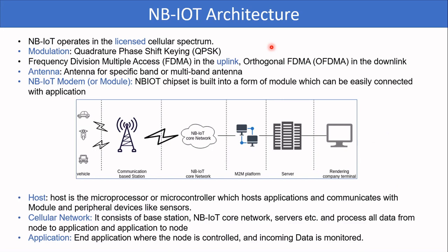The architecture of NB-IoT and cellular mobile networks is very similar. NB-IoT operates in the licensed cellular spectrum and uses QPSK as a modulation technique, also using FDMA and OFDMA for uplink and downlink. From the base station, the core NB-IoT network connects to a machine-to-machine platform. The function of this network is to transmit data between the IoT end nodes and the application server. The application server computes and analyzes the data and sends commands back to the end IoT nodes.